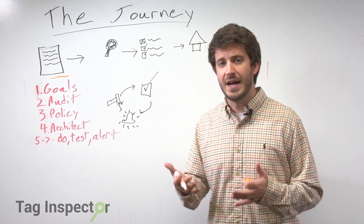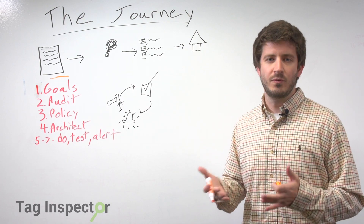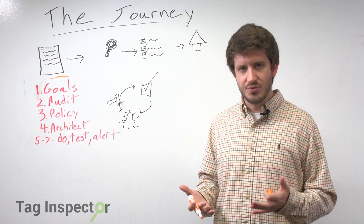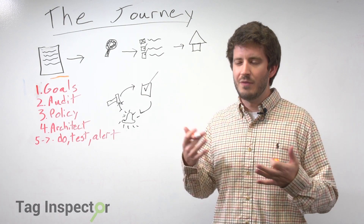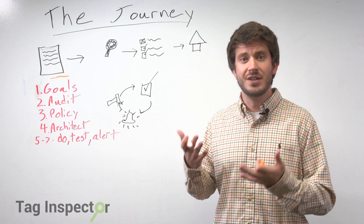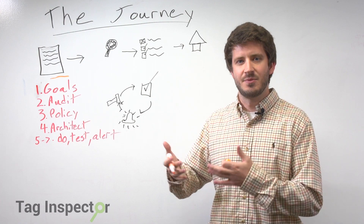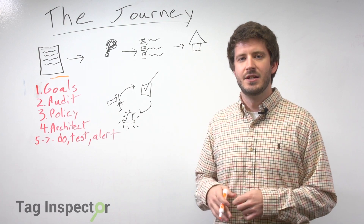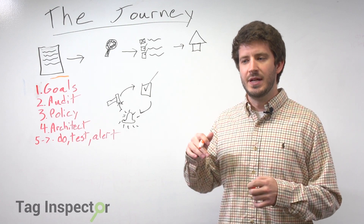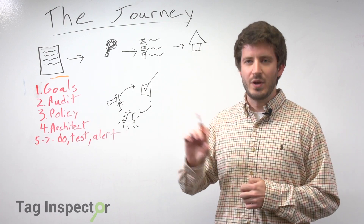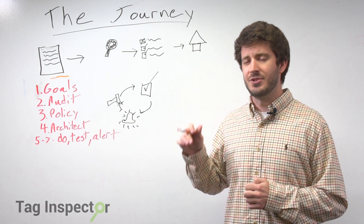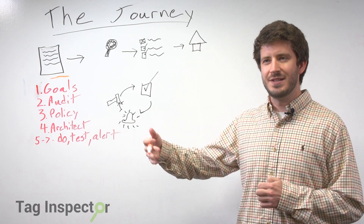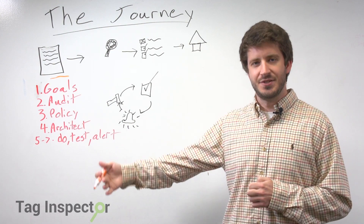So once we've defined the business goal, we've worked with our business users, we've worked with whoever is really interested in this particular tag issue and written out what we're trying to accomplish, we then move into some of these action steps.